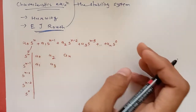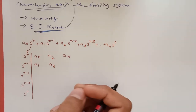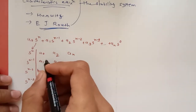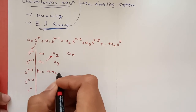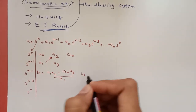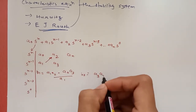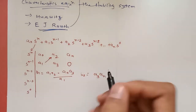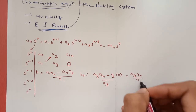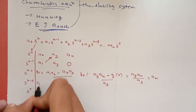For the Routh Stability Criteria, you first arrange this polynomial equation in the Routh array. The coefficient b1 is calculated as: b1 = (a1·a2 − a0·a3) / a1. For b2, which is in the second column: b2 = (a1·a4 − a0·a5) / a1, and where no value exists, treat it as 0, giving b2 = an at the second column.